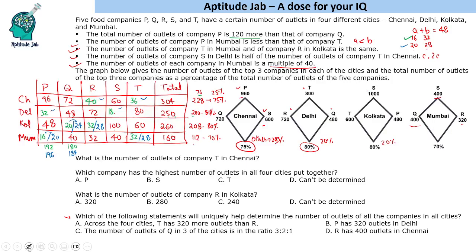Based on this analysis, the first question asks: what is the number of outlets of company T in Chennai? We can determine that the answer is 360. Remember, we omitted a trailing zero from each value throughout the table to reduce writing time.